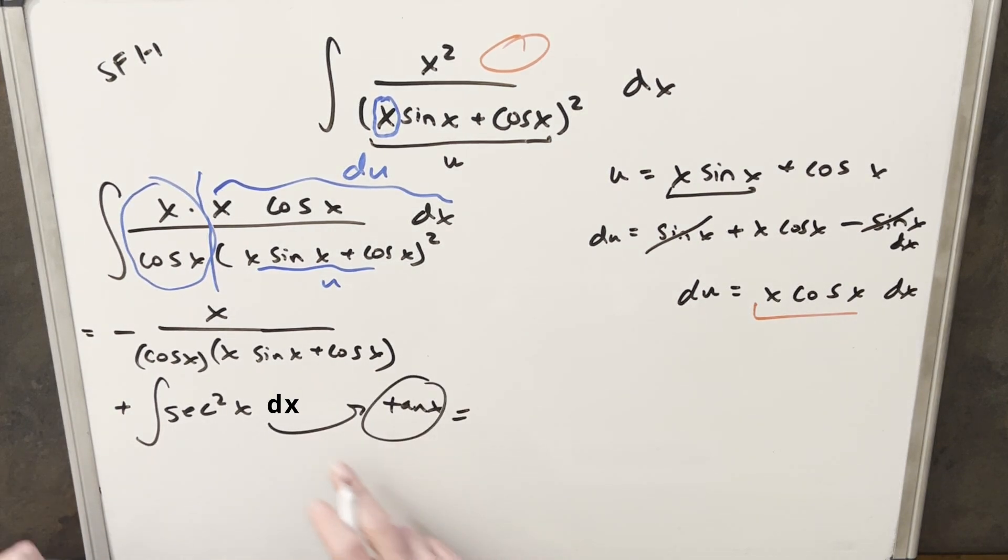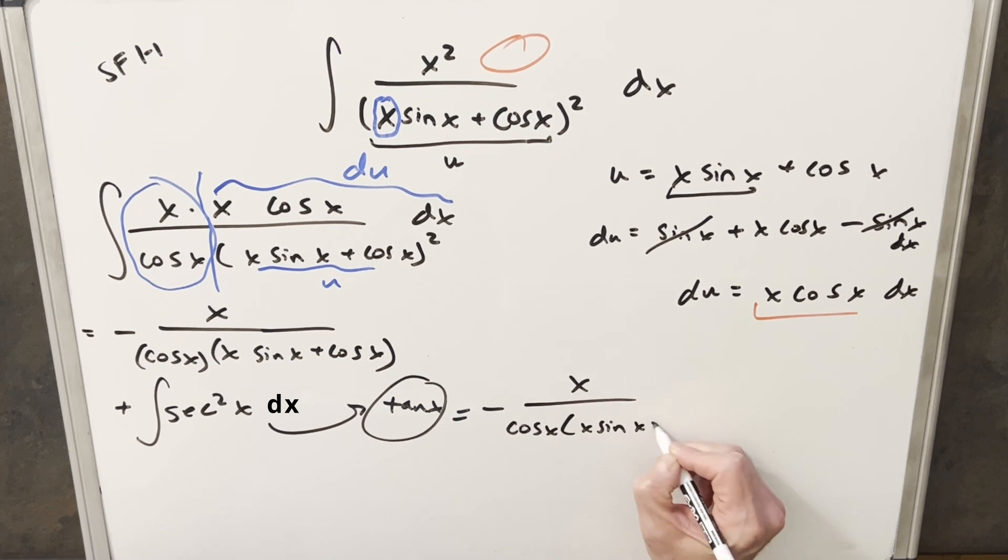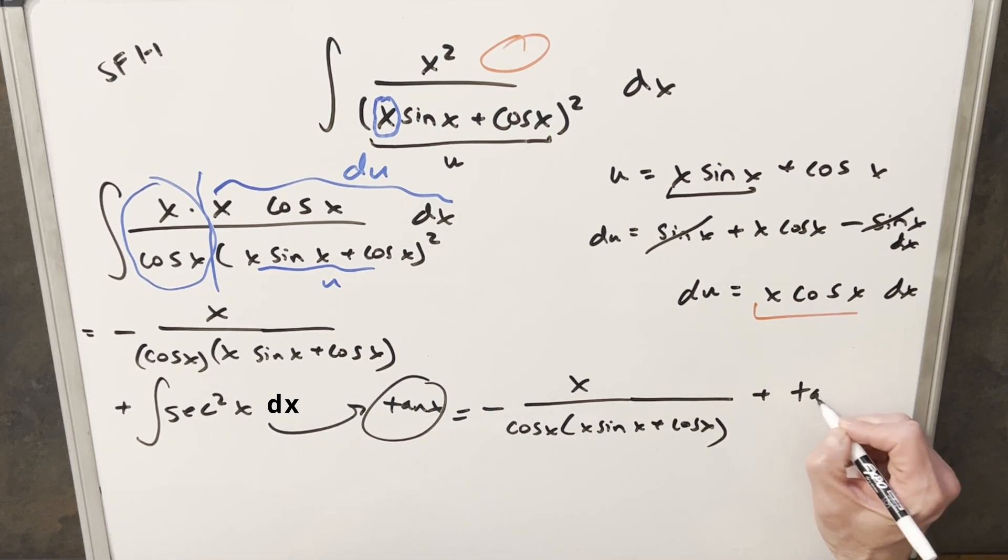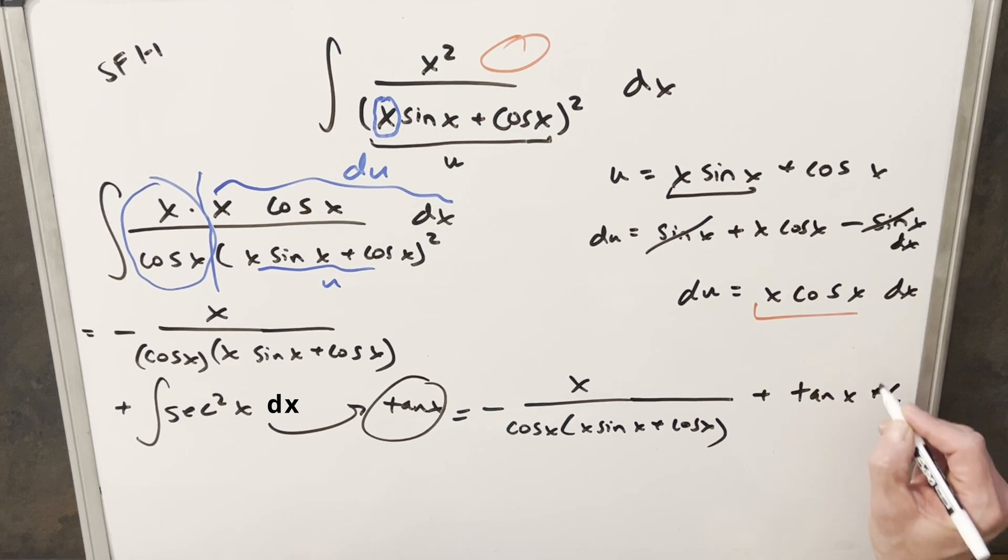But with that, we can just write down our final solution. So we'll copy down this first part. We're going to have minus x over cosine x times x sine x plus cosine x. Make it look good. Then we're going to just add this tan x, put a plus c, and that's it.